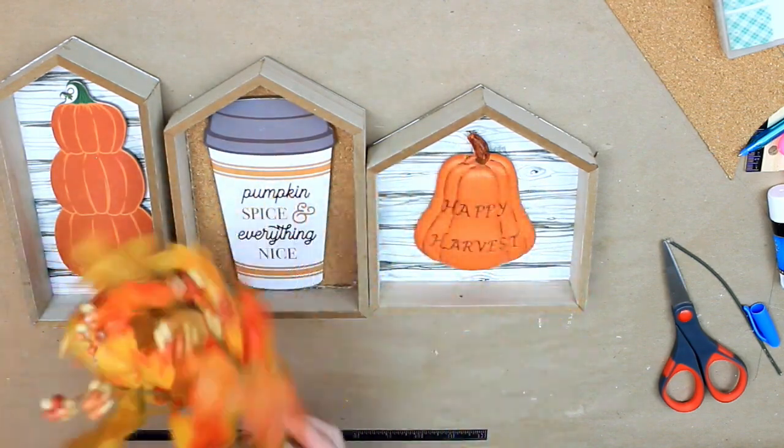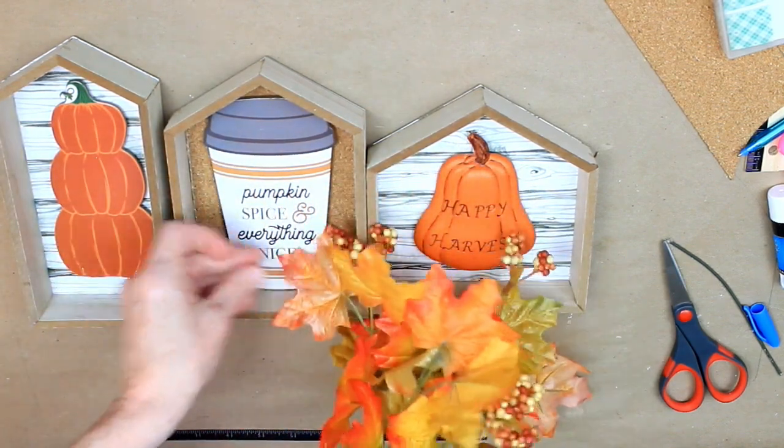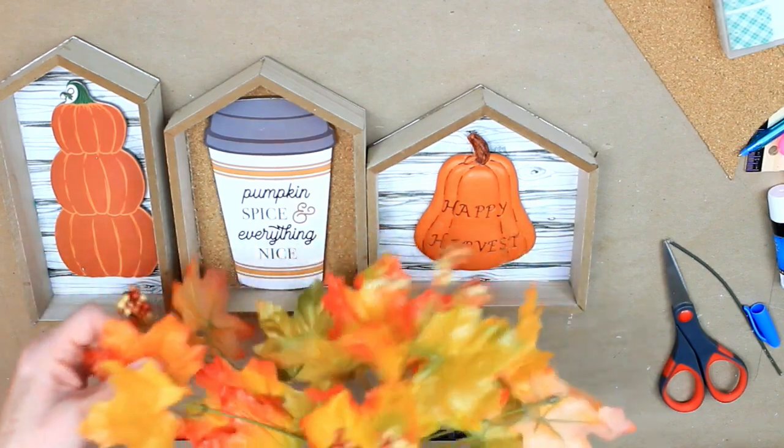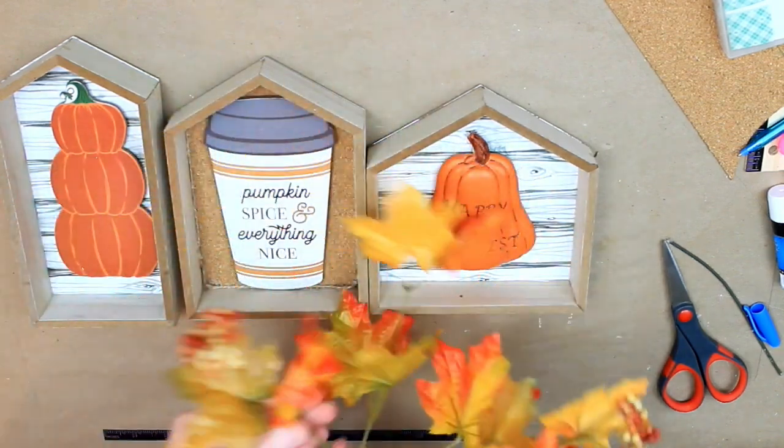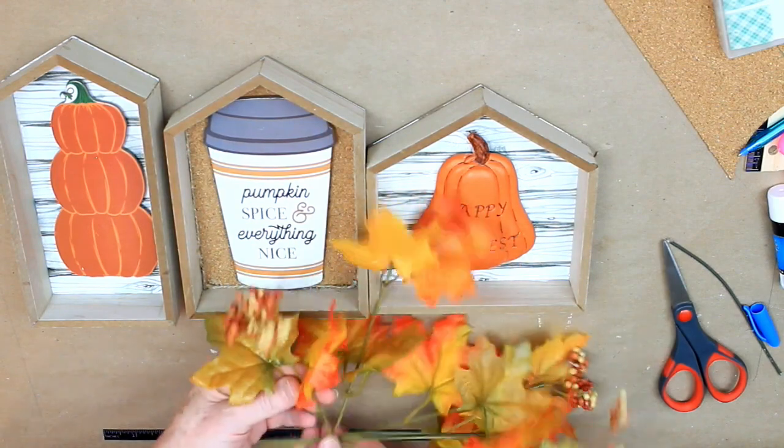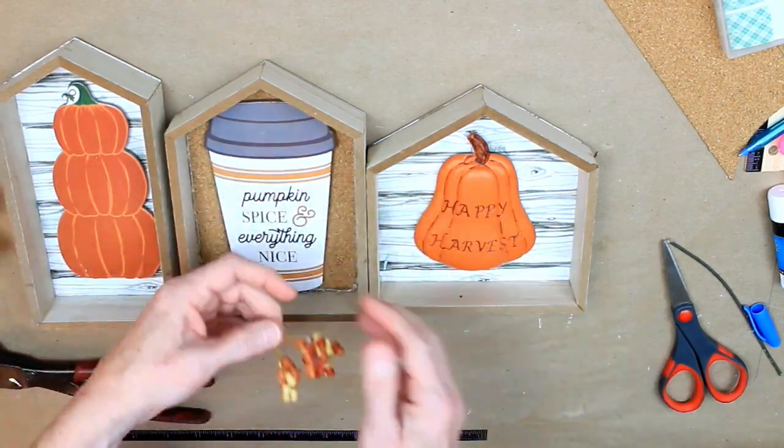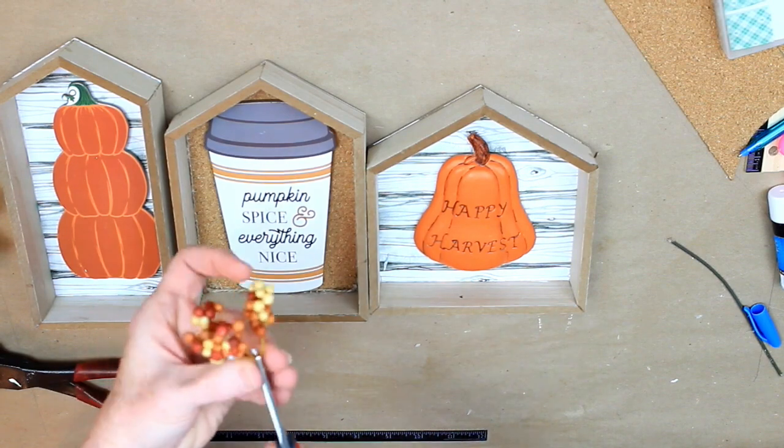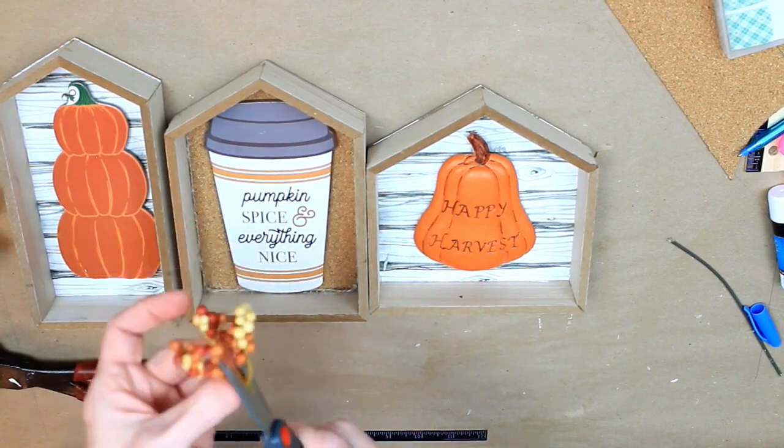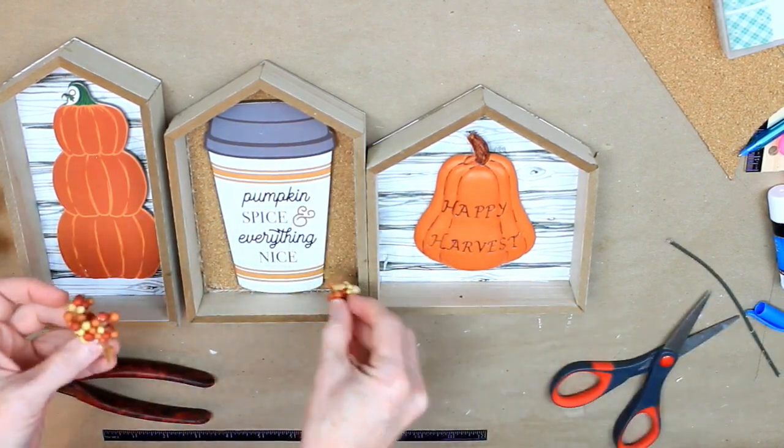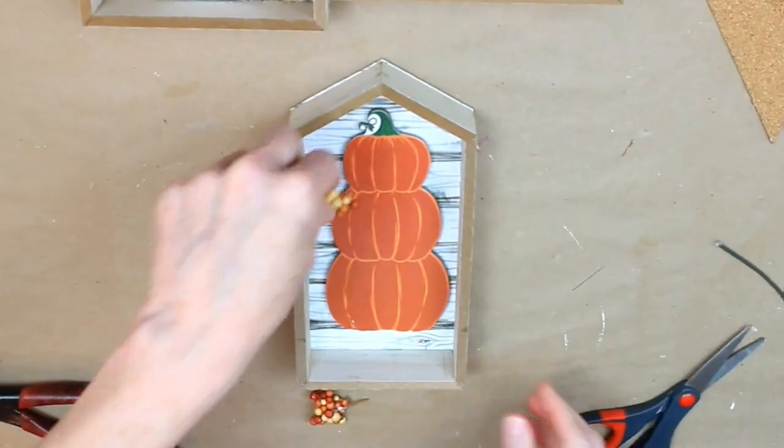Okay, so you're going to take a pick of your choice. This came from Dollar Tree. And just, you can put some leaves in this or around it. You can use the berries, which is what I'm going to use, and just cut it into pieces and use it as an accent wherever you wish.